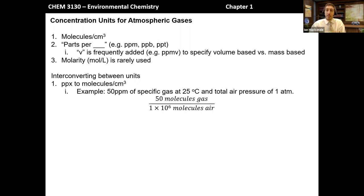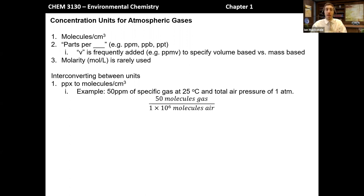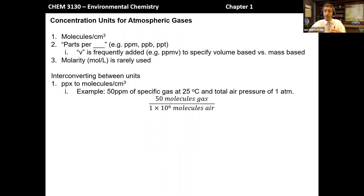What parts per million really means is that we have 50 molecules per 1 million molecules of air. This is distinct from the mass-based parts per million you may have encountered in general chemistry. Here, parts per million is simply 50 molecules per 1 million molecules of air. So if I want to convert this from molecules per 1 million to molecules per cubic centimeter, I have to change the denominator — the numerator units are fine, but the denominator needs to change from molecules to volume.